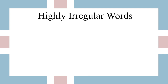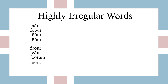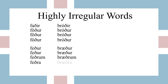There are a couple of words that are highly irregular — they don't follow any patterns and you really just need to learn them on their own. The first is 'faðir', meaning 'father'. In the singular we have 'faðir', 'föður', 'föður', and 'föður'; and in the plural we have 'feður', 'feður', 'feðrum', and 'feðra'. The next one is 'bróðir', meaning 'brother'. Accusative is 'bróður', dative 'bróður', genitive 'bróður'; and in the plural we have 'brœður', 'brœður', 'brœðrum', and 'brœðra'.